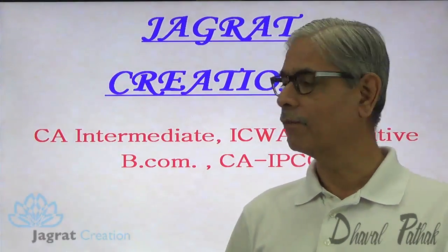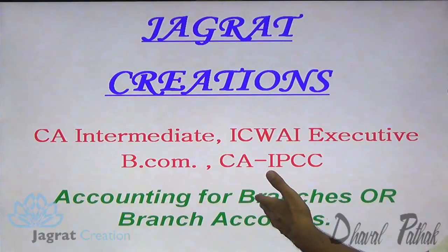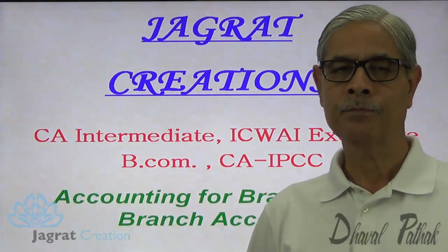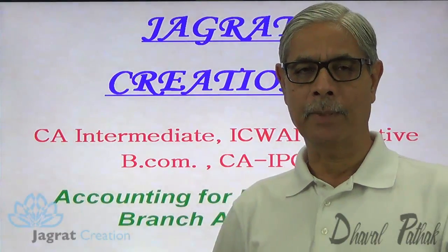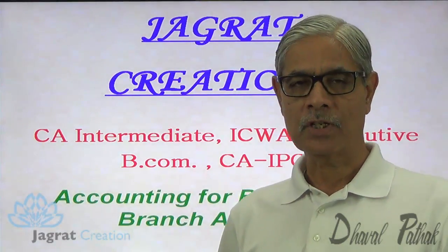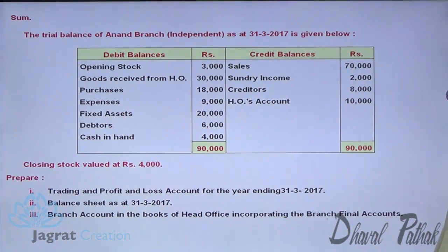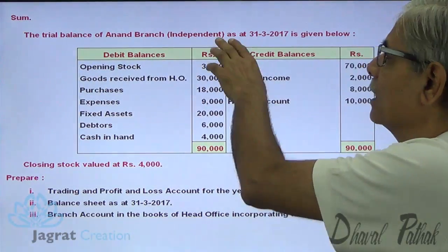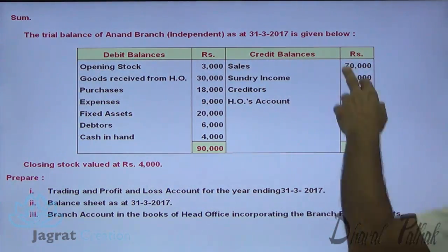I want to solve one sum on branch account, or the accounting for branches or branch accounts. This is a simple sum on independent branch. Just observe the sum on the screen which I intend to solve. A trial balance of Anand branch independent as on 31-3-2017 is given below.